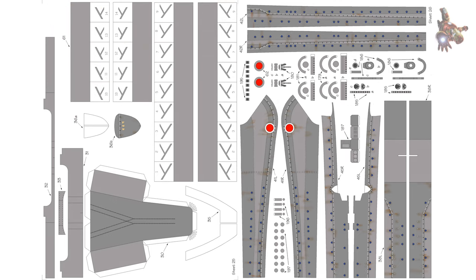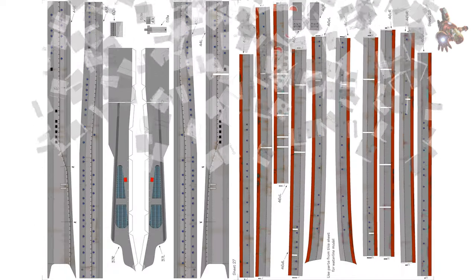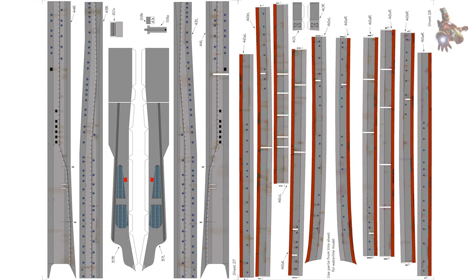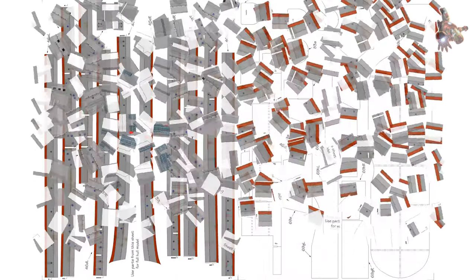I suggest starting by installing the completed turrets 171 before assembling all the sponsons 114, 115, and 116, ensuring their attachment to the superstructure comes after fixing them to the deck.